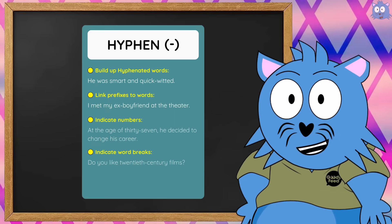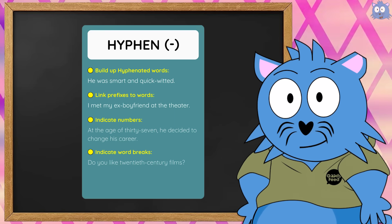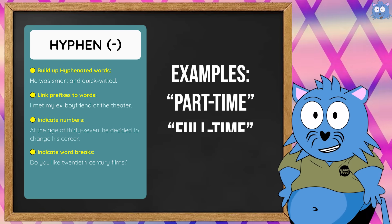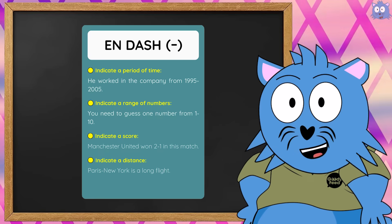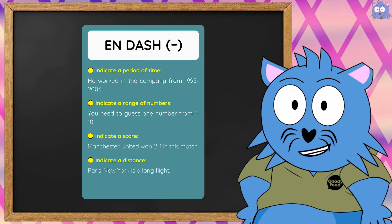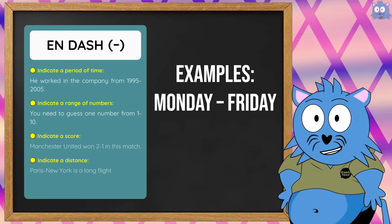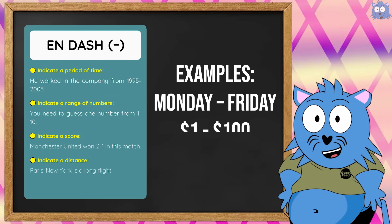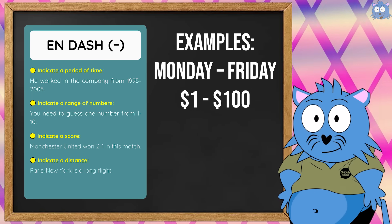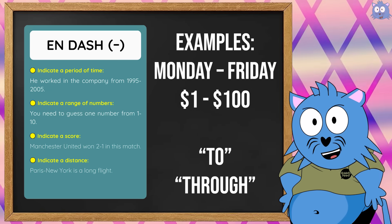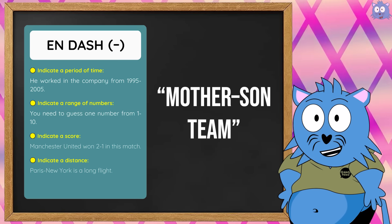The hyphen is something we use very regularly — it connects words to create a new word, like hard-thumb, full-thumb, son-in-law, and so on. The second, called the N-dash, is used to express a range, like Monday to Friday or $1 to $100. It can also be used for a relationship, like mother–something.